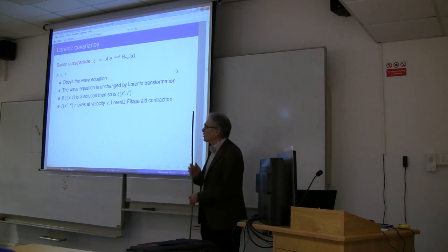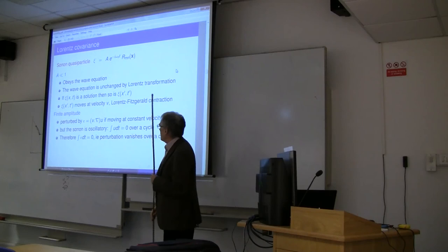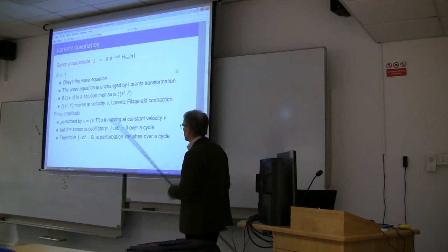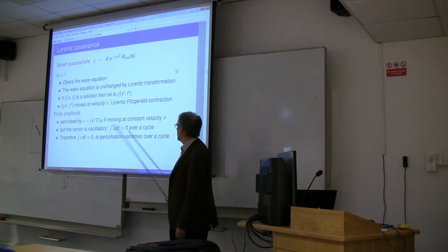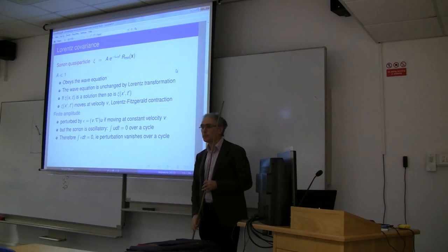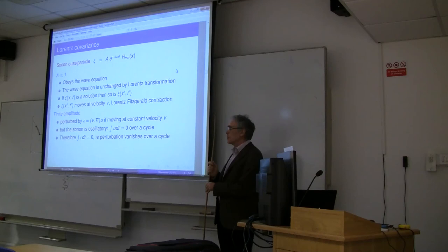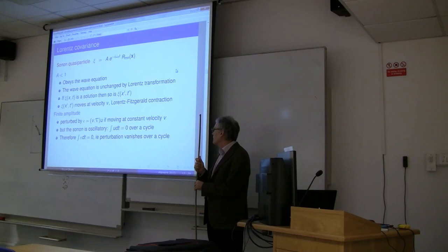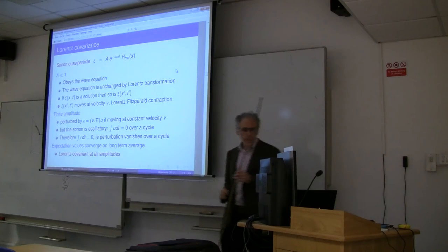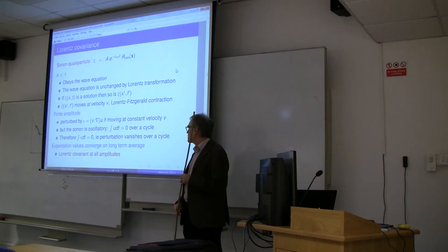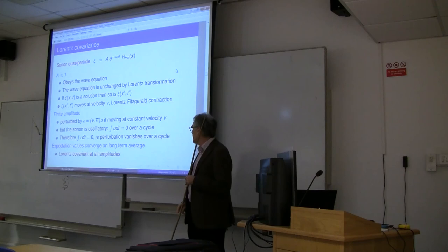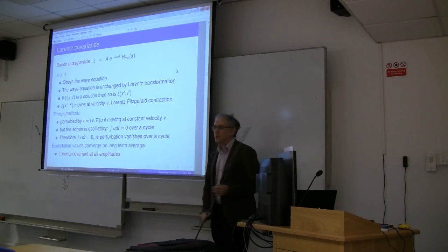That's fine at low amplitude. Is it true at larger amplitude? Well, it's not quite true, but it's very, very nearly true. I've focused on the largest perturbation. The other perturbations have the same effect, actually. It's perturbed by this nonlinear term. If I make the thing move at constant velocity v, I get this perturbation. Epsilon is v dot grad u. But as someone is oscillatory, and it turns out this perturbation vanishes over a cycle. Average a bit over a cycle. And, of course, these, if you're measuring over long distances, you're going to disturb it. Now, usually you define in quantum mechanics what's called an expectation value, which converges on the long-term average. And, therefore, the motion of these things are Lorentz covariant at all amplitudes.